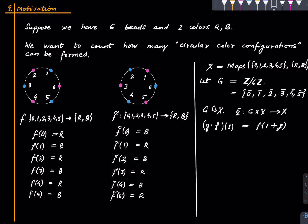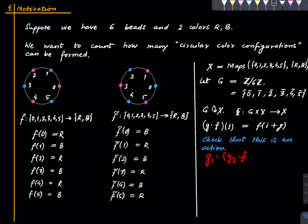Verify that this is indeed an action. One needs to check two properties: first, if g is the identity (i.e., 0̄), then g · f = f, which is clear since adding 0 changes nothing. Second, g₁ · (g₂ · f) = (g₁g₂) · f, which is also easy to verify. So this is indeed an action.